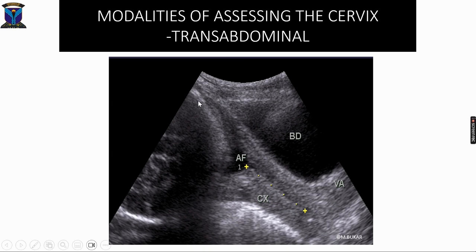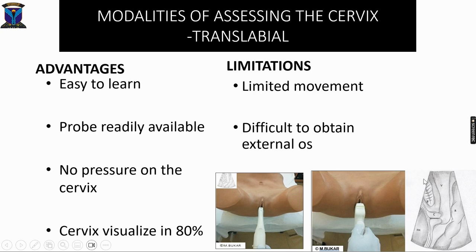This transabdominal image shows the bladder and vagina. You can define the cervix and identify the internal and external os, but it is difficult to define the cervical mucosa — all you can see is the stroma. Image quality is poor, and there is shadowing from the fetal head. If the fetal head is down, it could obscure assessment of the internal cervical os.